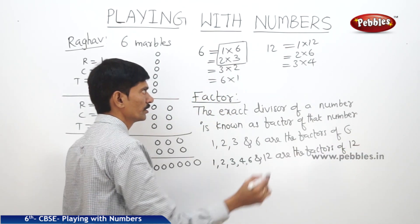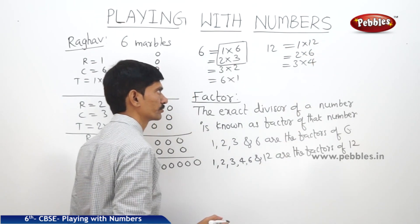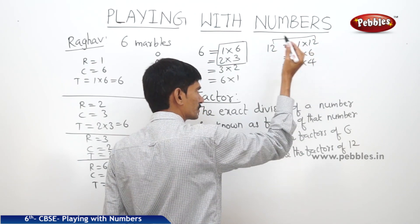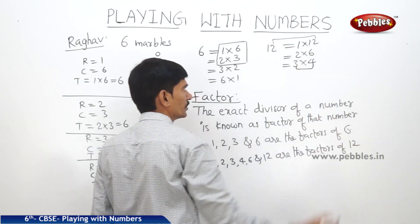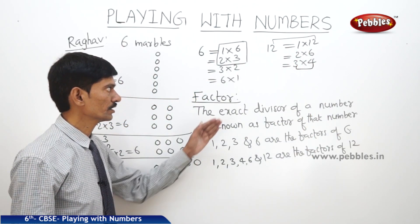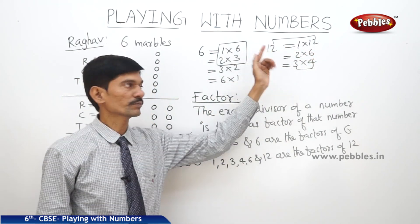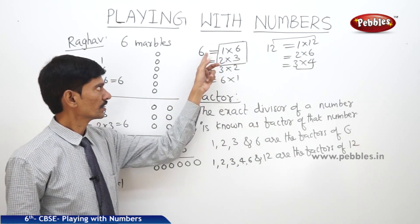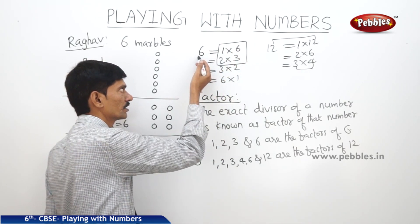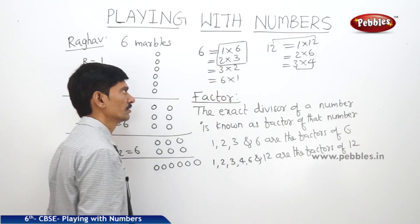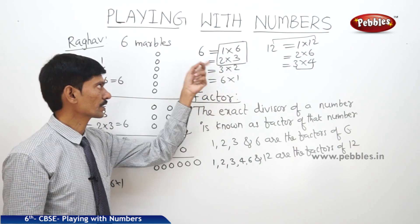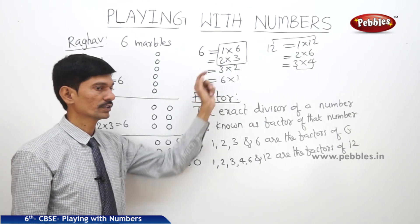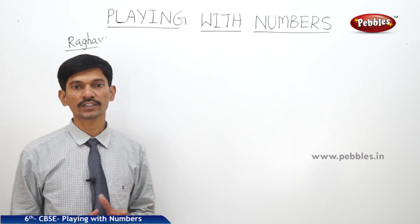Since one, two, three, four, six, and twelve are the factors of 12, then 12 is the product of one and twelve, of two and six, and of three and four. So 12 is also known as the multiple of one and twelve, of two and six, and of three and four. Similarly, six is the multiple of one and six, and also the multiple of two and three.